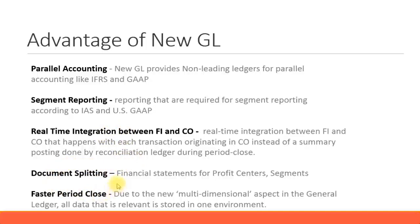Another advantage is document splitting. Through document splitting, the system distributes balance sheet information flowing on to profit centers and segments. We will look at document splitting in our next presentation, where we discuss in detail the different types of document splitting and how the system actually splits those line items and posts to profit centers and segments. Because of document splitting, you are able to make profit center-wise and segment-wise reporting possible.